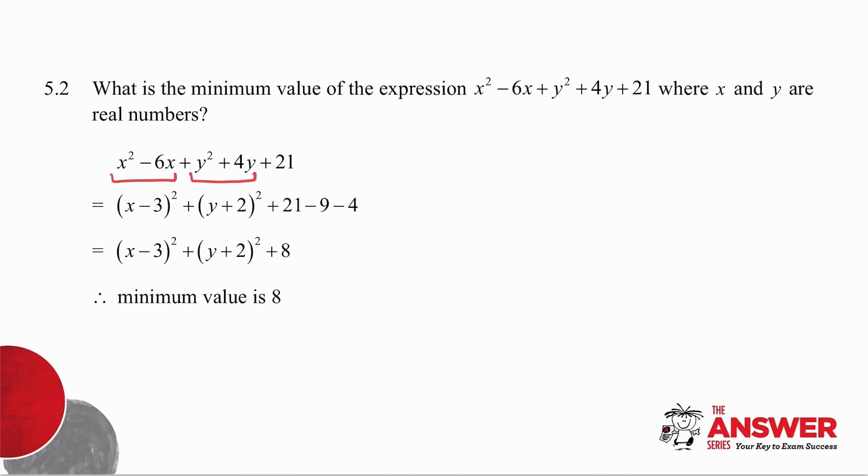Now what do you know about a bracket squared? It's always greater than or equal to 0. This bracket is greater than or equal to 0. They've asked you for the minimum value of the expression. So the lowest this can be is 0, 0, 8, which means my minimum value is 8.